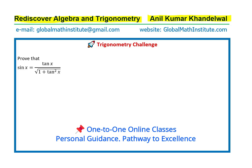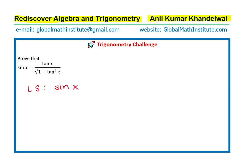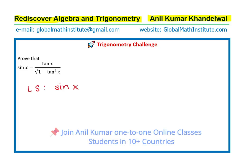Let's try to understand the strategy. We'll begin with the left side, which is given to us as sin x. If you look at it, we need the square root of 1 plus tan square x. So, what can we do about it?